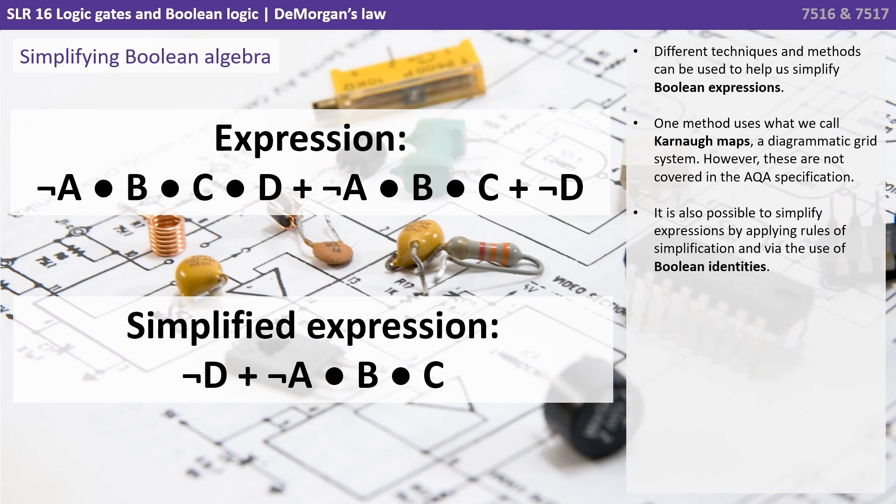Different techniques and methods can be used to help us simplify Boolean expressions. One method uses what we call Karnaugh maps, a diagrammatic grid system. However, these are not covered in the AQA specification.